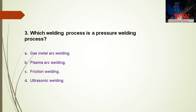Question 3: Which welding process is a pressure welding process? A — gas metal arc welding; B — plasma arc welding; C — friction welding; D — ultrasonic welding. The right answer is friction welding and ultrasonic welding.